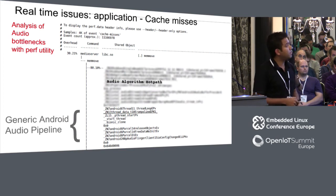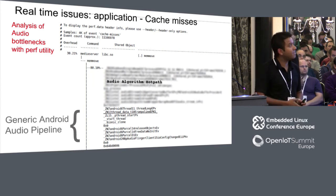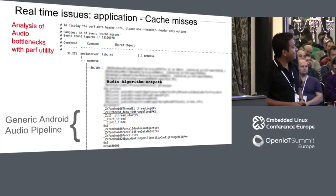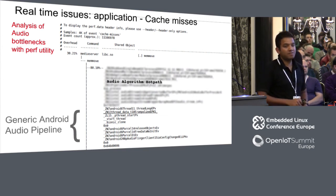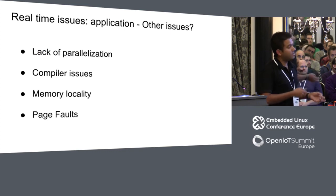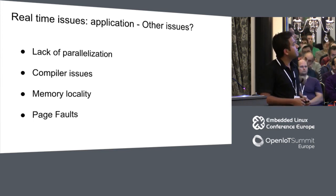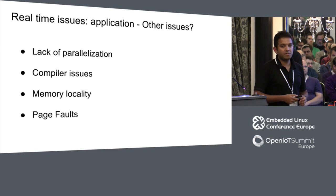I used perf quite a lot to find issues like cache misses and reported them to the algorithms team — for example, 30% cache miss rate. I found they were not using enough parallelization to run the algorithm. You can also have other application issues like page faults and memory locality issues.